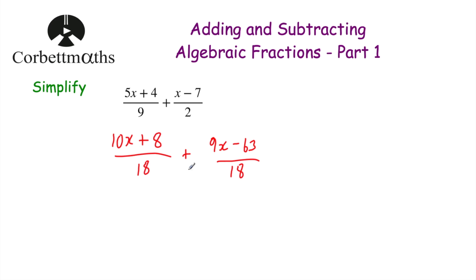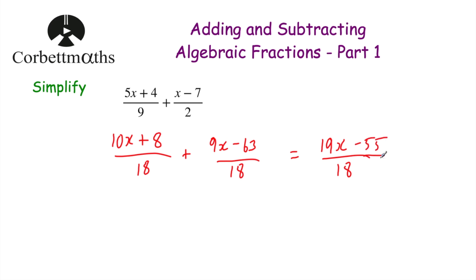We've got (10x + 8)/18 + (9x − 63)/18. To add together two fractions with the same denominators we just add the numerators together. The denominator stays as 18. For the x terms: 10x + 9x = 19x. For the numbers: 8 + (−63) = 8 − 63 = −55. So our answer is (19x − 55)/18. I'll check if we can factorise the numerator — we can't — so that's our final answer for simplifying (5x + 4)/9 + (x − 7)/2.